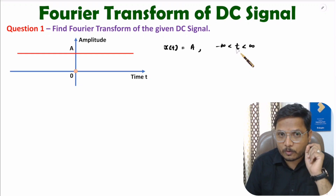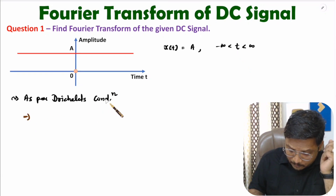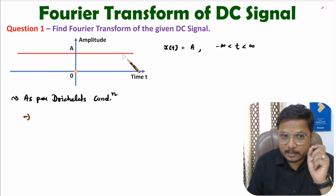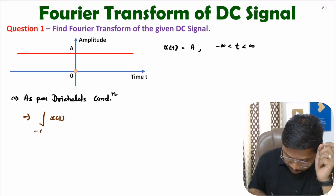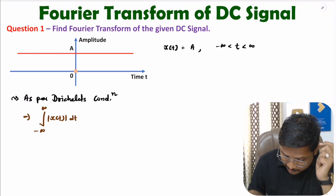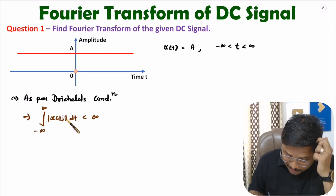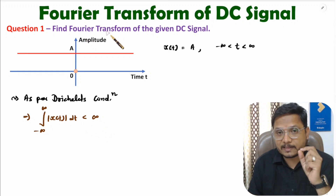Let me explain that condition. As per Dirichlet's condition, the given signal should be integrable, meaning when you integrate this signal X(t) over the time from minus infinity to plus infinity, then it should have a finite value — it should be lower than infinity. So this condition should be followed to get the Fourier transform of any signal.